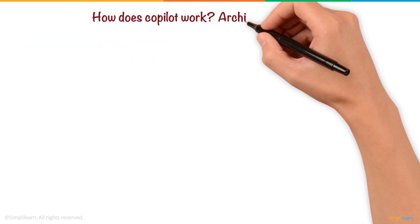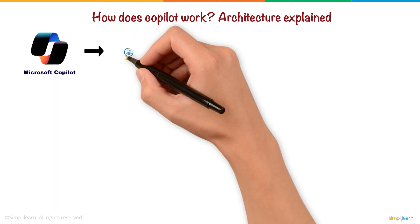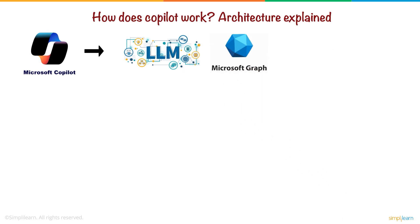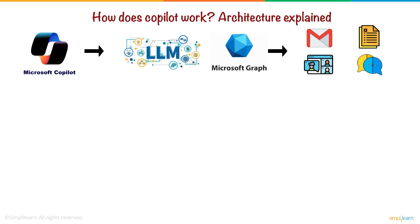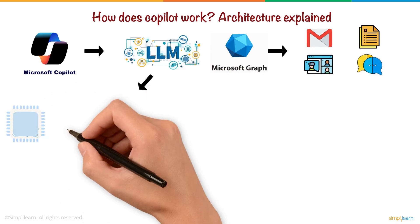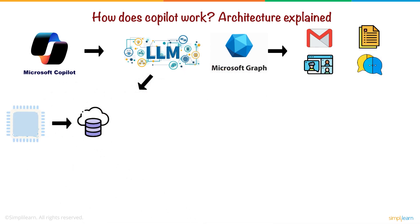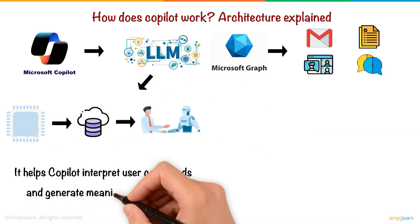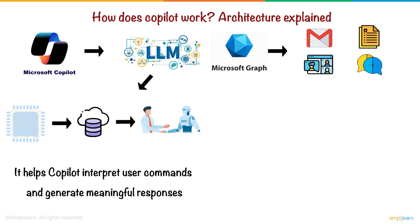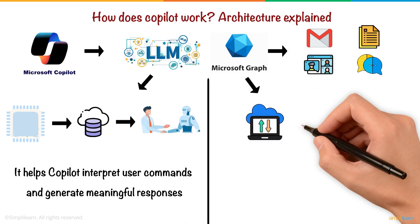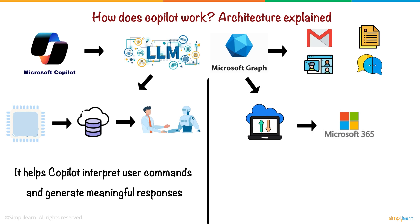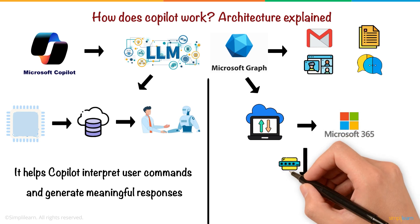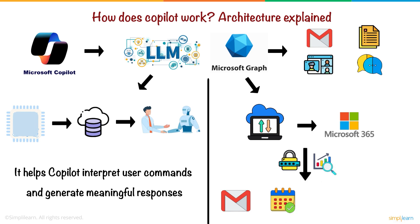How does Copilot work? Architecture explained: Copilot works by combining large language models (LLMs) with Microsoft Graph, which contains data from a user's emails, documents, meetings, and chats. An LLM is an artificial intelligence model trained on vast amounts of text data to understand and generate human-like language. Microsoft Graph is a data platform that connects all Microsoft 365 applications, allowing Copilot to access and analyze information from emails, calendars, files, and Teams conversations to provide relevant suggestions.